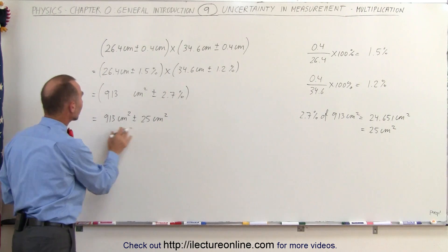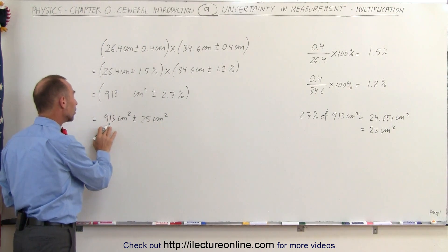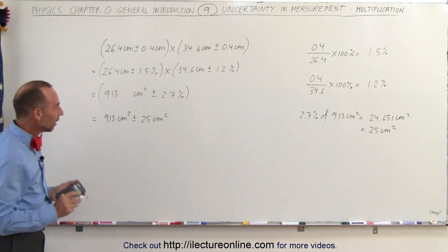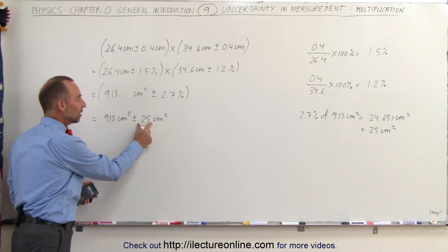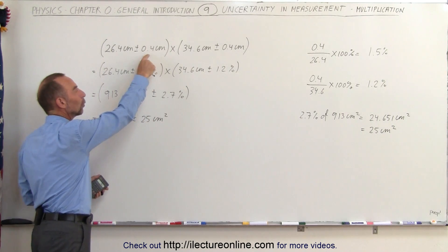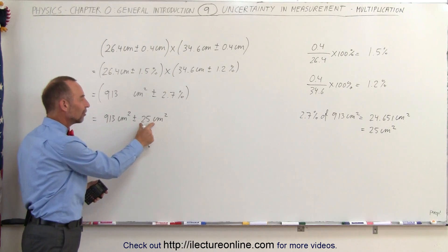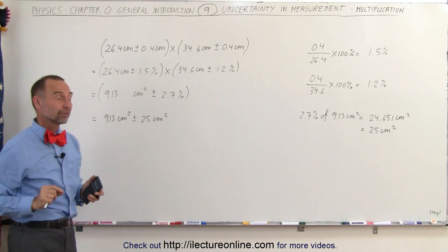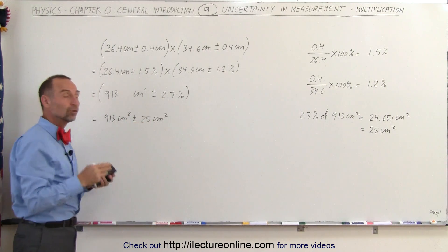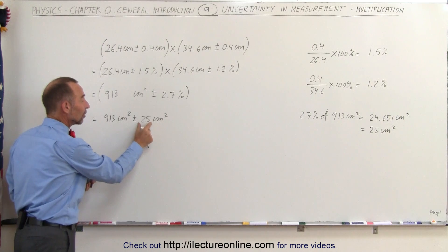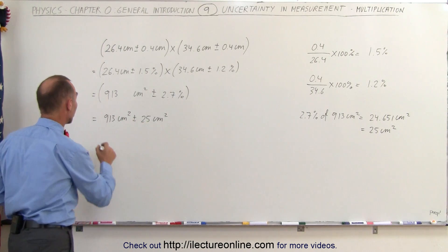Now one more thing: here we have the uncertainty in two significant figures, and here it's only in one significant figure. That doesn't seem right, does it? We really should convert this so that this only has one significant figure, which means we want to bump that up to the next number where it contains only one significant figure, which would be 30 centimeters squared.